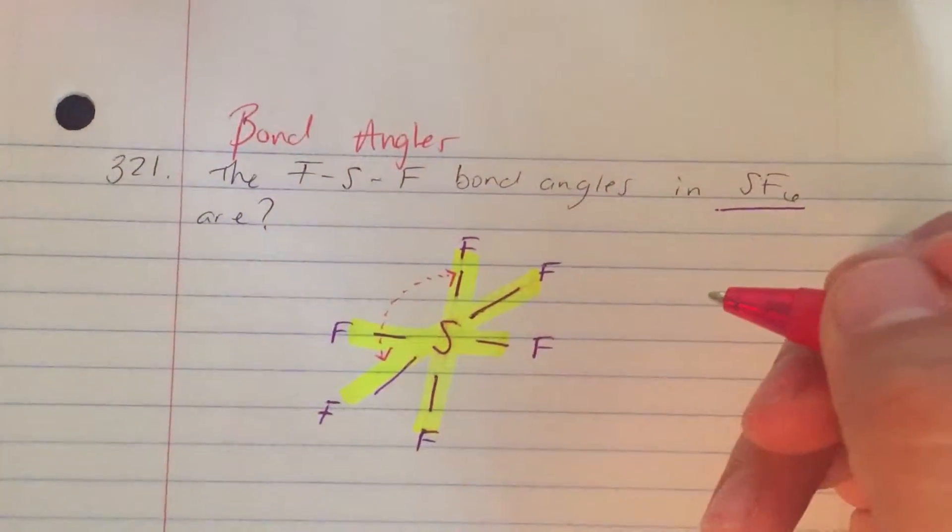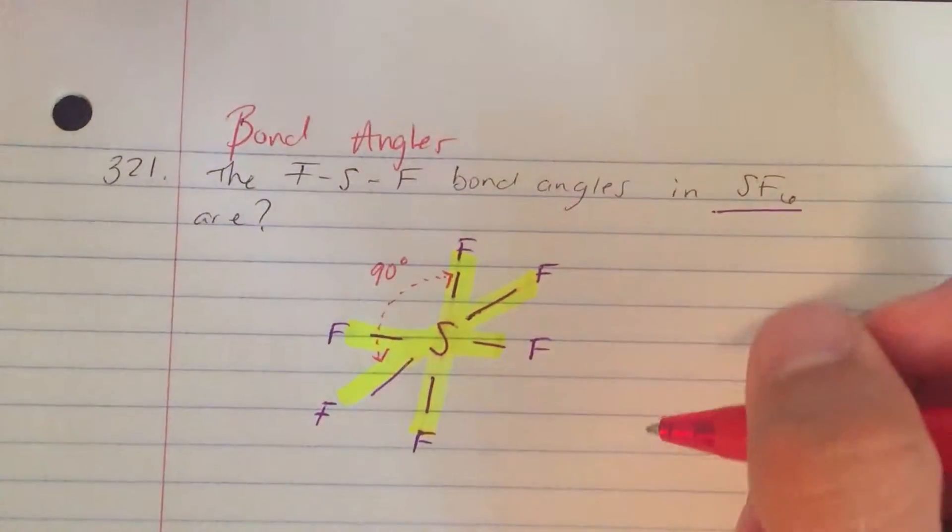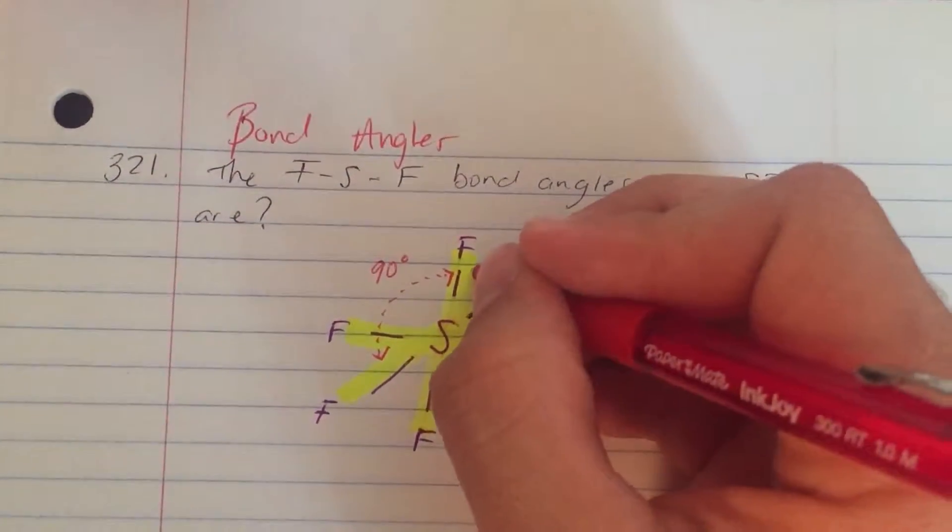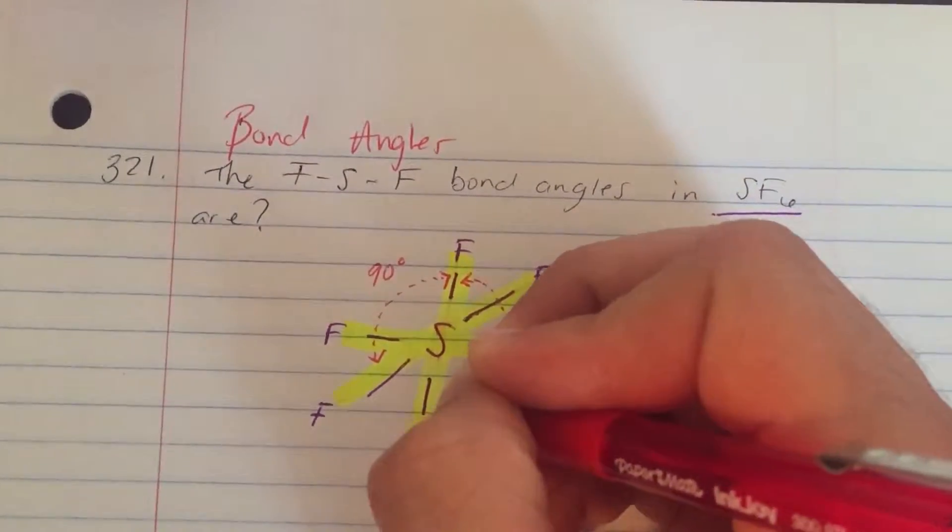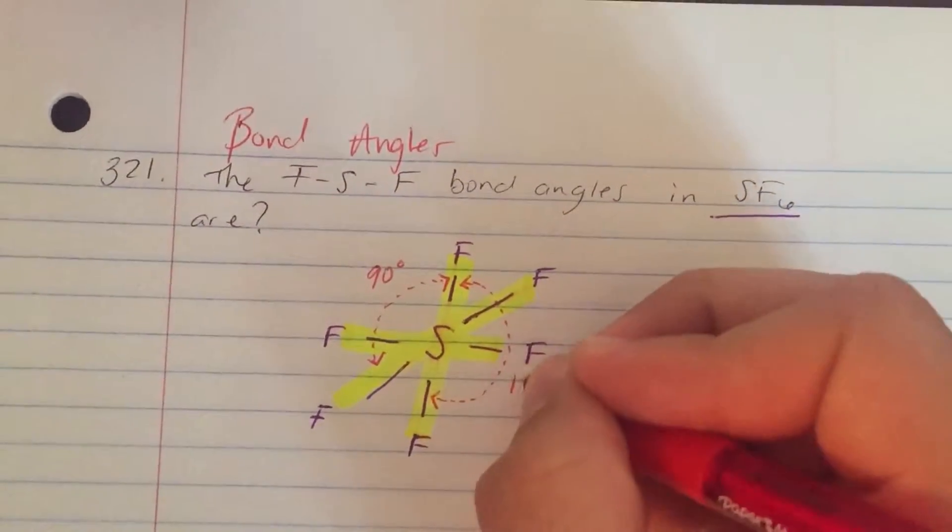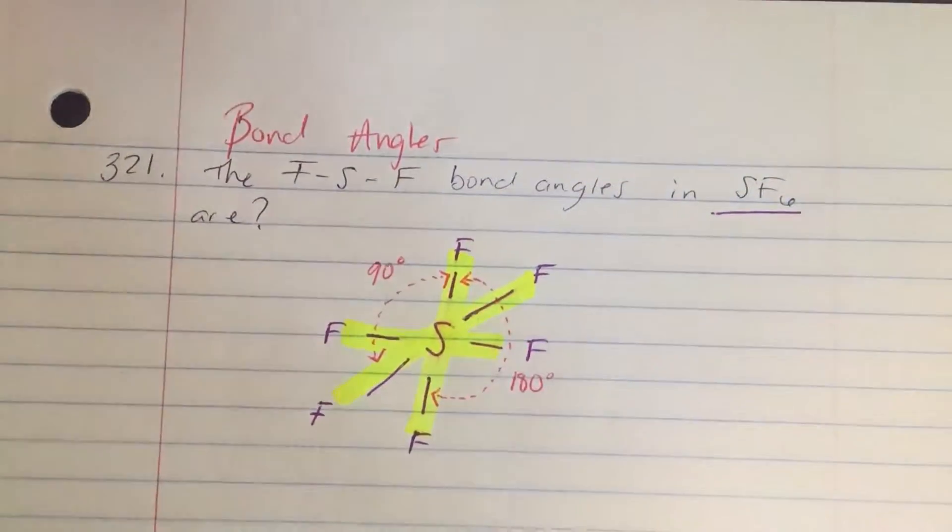Which is 90 degrees. And of course there are other angles that go from side to side. These are 180 degree angles.